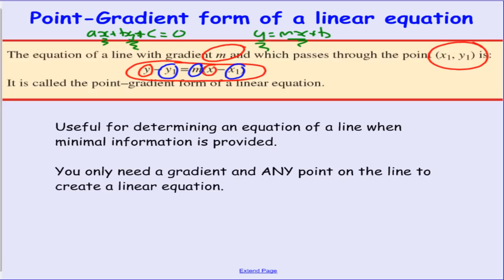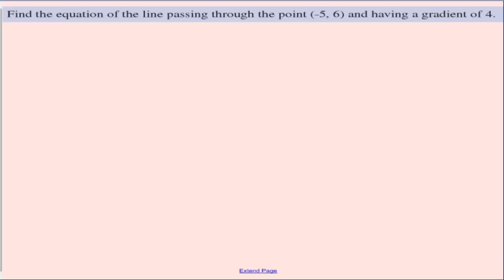We're going to rearrange it, we're going to play with it and we're going to make it look like a general form or a gradient intercept form depending on what information is required. Okay, first example, make it nice and easy. The equation you're going to need to remember: y minus y1 equals m outside of x minus x1. That's going to save your life.